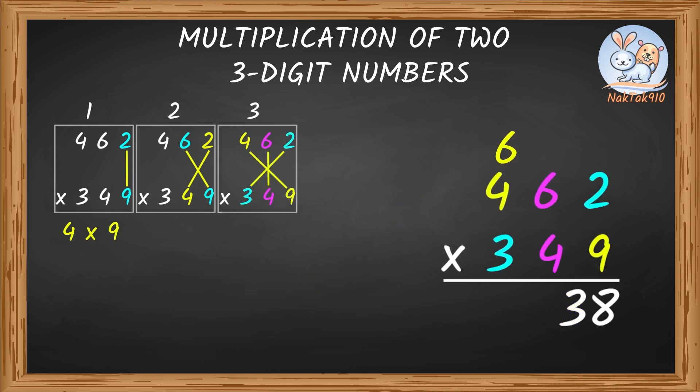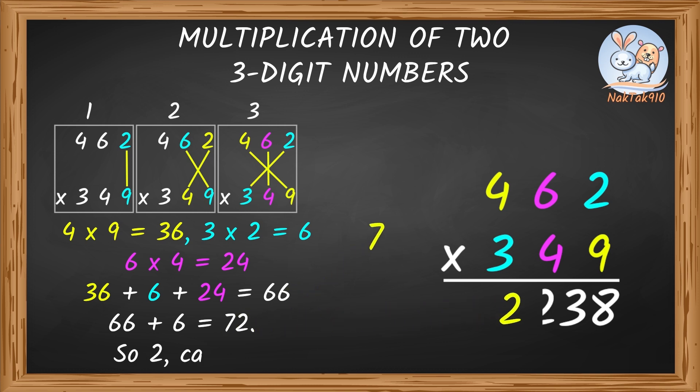4 times 9 equals 36. 3 times 2 equals 6. 6 times 4 equals 24. 36 plus 6 plus 24 equals 66. 66 plus 6 equals 72. So, 2 and carry 7.